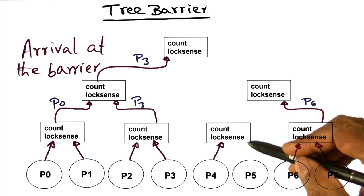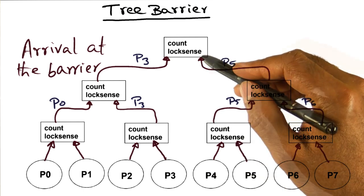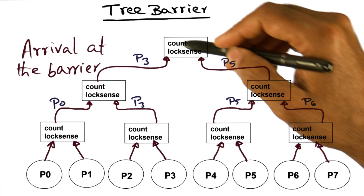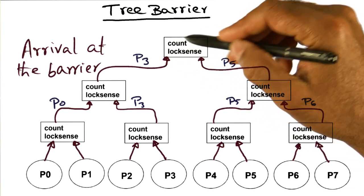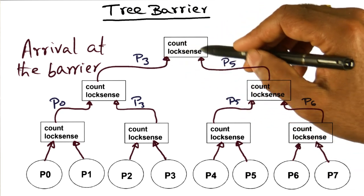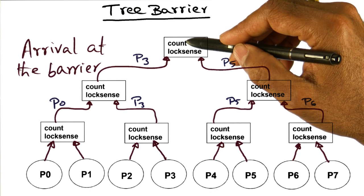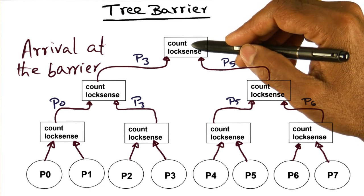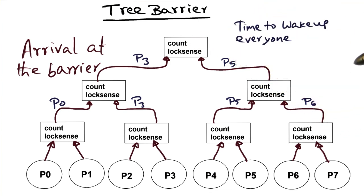So we come here, P5 comes here, and goes all the way up. And when it comes up here, it sees that P3 has already decremented the count to one, and so when he comes up, he decrements it, and it becomes zero. And at this point, everybody has arrived at the barrier.